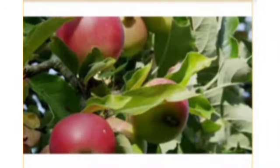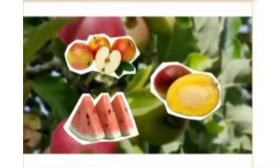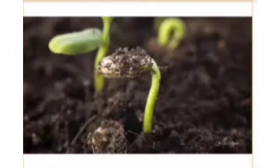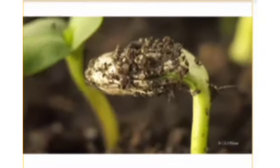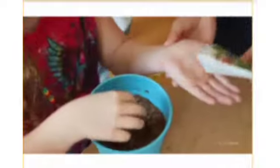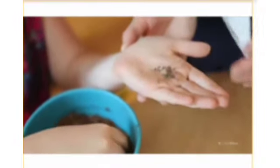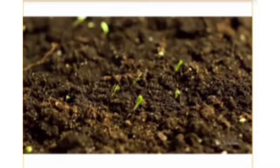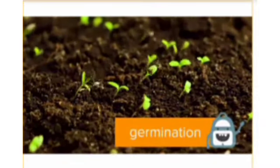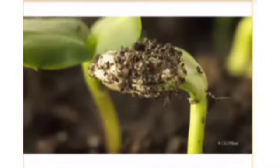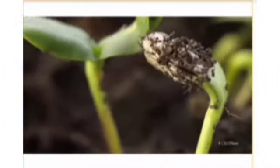Some flowers grow into fruits after a while, and these fruits have seeds inside. Some examples include apples, mangoes and watermelon. Did you know that a seed contains a baby plant inside it? If you plant a seed in soil and it gets enough air, food, sunlight and water, it will begin growing into a new plant. This process is called germination.